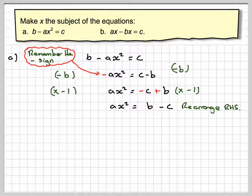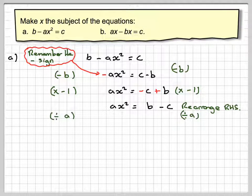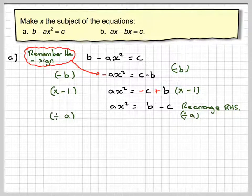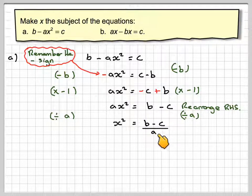The opposite of multiplying by a is to divide by a. Remember, when dividing in algebra, you need to draw a line and write it as a fraction. So now you've got x squared equals b minus c over a.